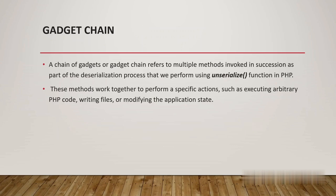Coming to gadget chains: a gadget is a single function, and a gadget chain is a chain of functions. Whenever a serialized object gets passed from client side to server side, it gets unserialized using the unserialize() function in PHP. This unserialize function can call multiple methods because sometimes the incoming data needs processing. A developer may implement 10 or 12 methods to process the data — the input passes into function one, the output of function one passes into function two, and so on. This chain of functions is what we call a gadget chain.